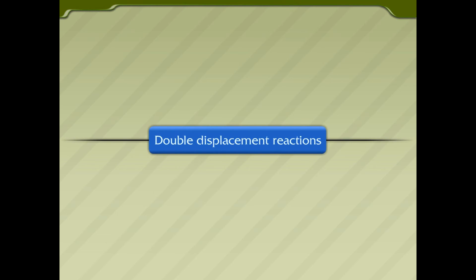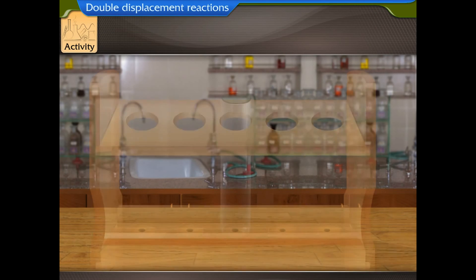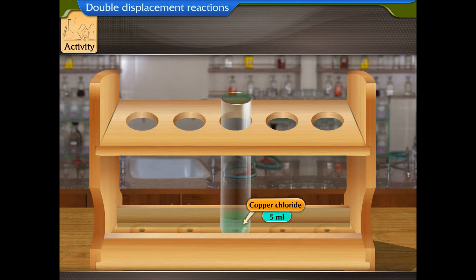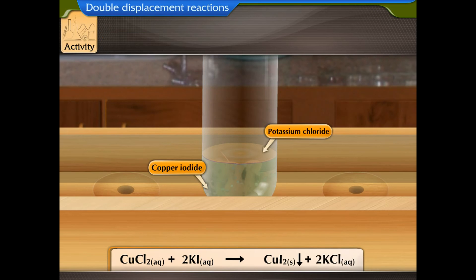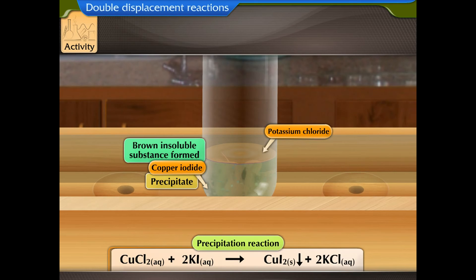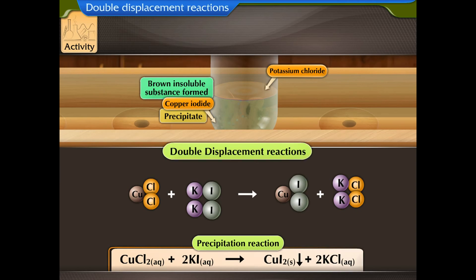Let us perform an activity to understand double displacement reactions. Take about 5 ml of copper chloride in a test tube and add 5 ml of potassium iodide solution. Copper chloride reacts with potassium iodide to form insoluble copper iodide and potassium chloride — a brown insoluble precipitate is formed. In double displacement reactions, ions of the reactants exchange places to form two new compounds.